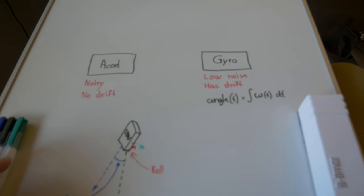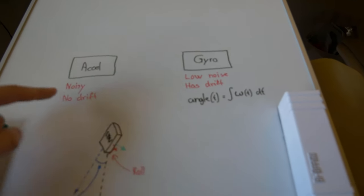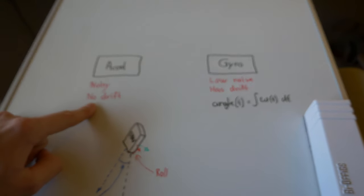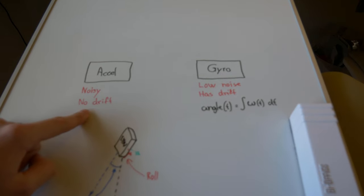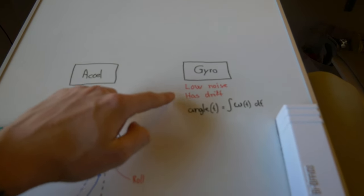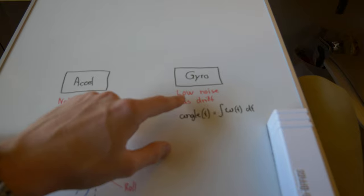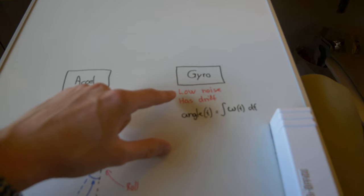The complementary filter is a way that you can combine the no drift properties of your accelerometer with the low noise and fast response time from your gyroscope.